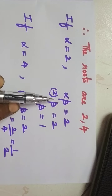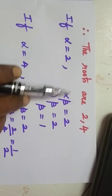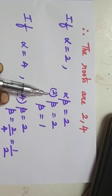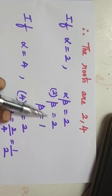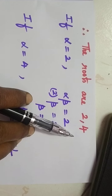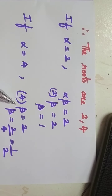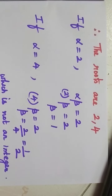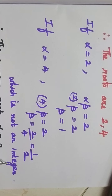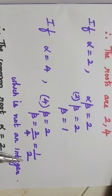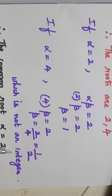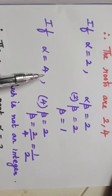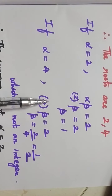So the roots are 2 and 4. Now check: if alpha equals 2, then since alpha beta equals 2, we get 2 times beta equals 2, so beta equals 1, which is an integer. If alpha equals 4, then 4 times beta equals 2, giving beta equals 1 by 2, which is not an integer. Since the other roots must be integers, alpha equals 4 is rejected.